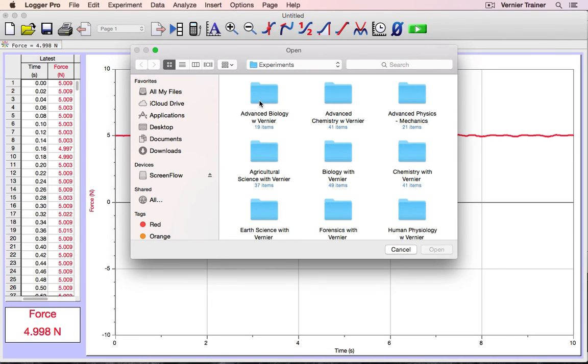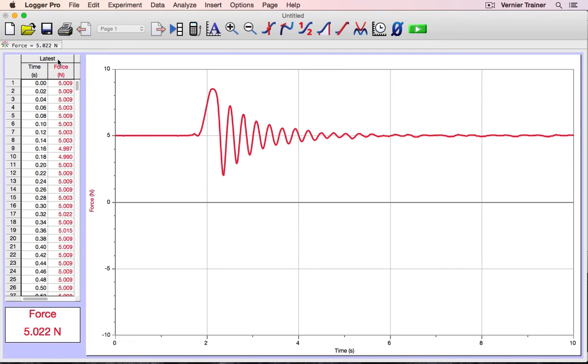If you didn't open a file but just plugged in a sensor, Logger Pro makes a best guess at how you want to use that sensor and selects some default data collection parameters for that sensor.